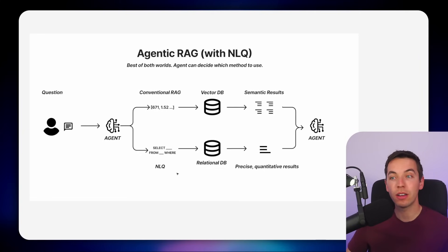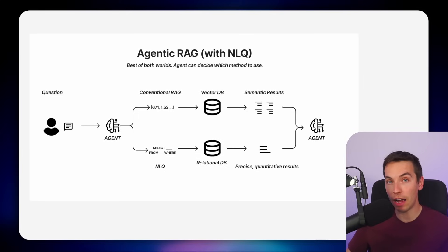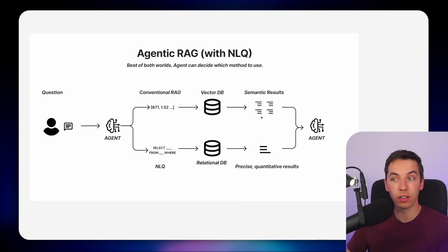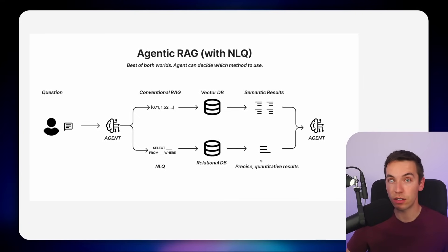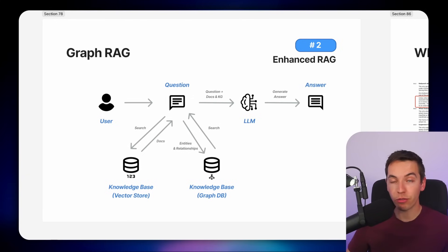Later on I'll explain how to build this NLQ database querying functionality into an agentic RAG system so the agent has the best of both worlds — querying the vector database for semantic results, and the relational database for precise quantitative results from structured data. You could also combine this with a graph RAG system like Daniel covered in our recent video linked below.